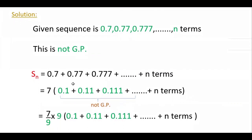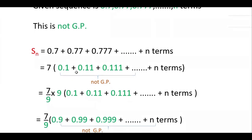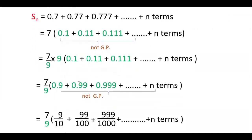For that, write: Sn equals 0.7 plus 0.77 plus 0.777, etc. Here 7 is common, so factor out: 7 into (0.1 plus 0.11 plus 0.111, etc., n terms). Check again — this is also not GP. So multiply by 9 and divide by 9, giving 7 by 9 into (0.9 plus 0.99 plus 0.999, etc., n terms). Check again — this is also not GP.